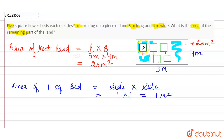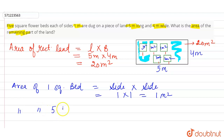The area of one square bed is one meter square. Therefore, the area of five square beds will be equal to five meter square.